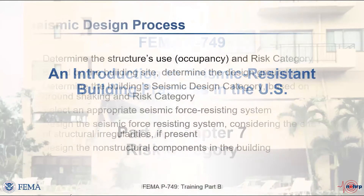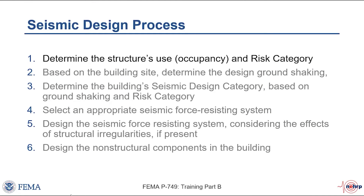The first part of the structural design process for seismic resistance is to determine the structure's risk category, based on its intended use and occupancy. We talked about the concept of acceptable risk — how much damage we're willing to accept. For some structures, we accept significant damage as long as it doesn't result in collapse and loss of life safety. For others, like hospitals and fire stations, where the building must be functional immediately after an earthquake, we accept much less damage. ASCE 7 tiers its requirements based on risk category, with higher risk categories designed more conservatively to experience less damage.